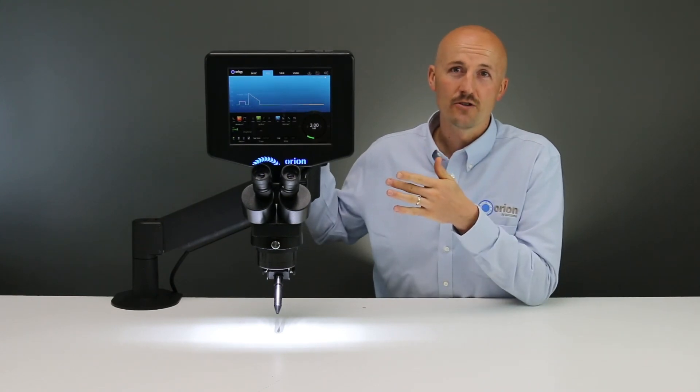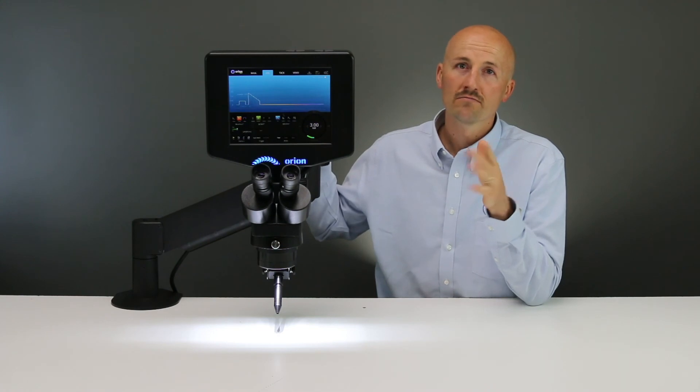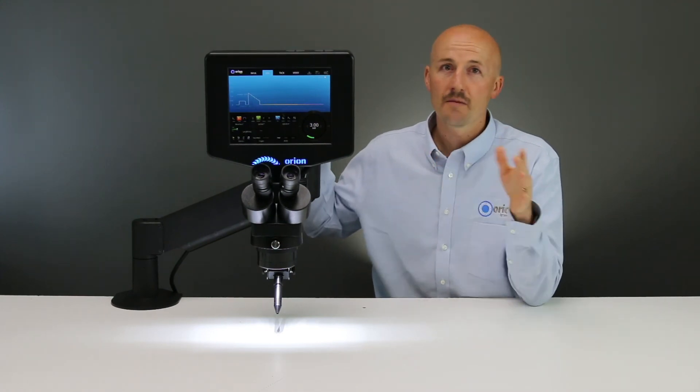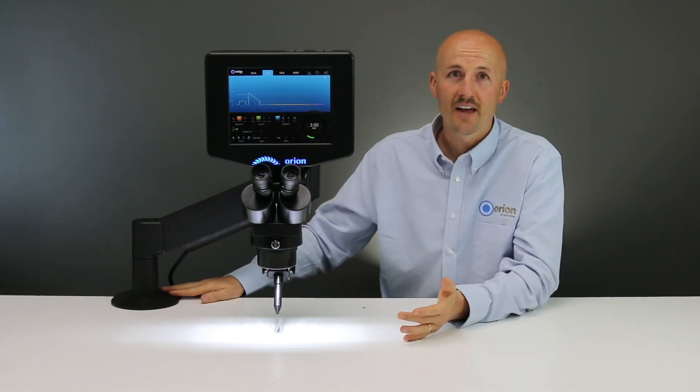This is the Orion 200i2, and it has everything you could ever need and more in the smallest footprint of any micro welding system in the market. This is only four inches by four inches. It's practically nothing.